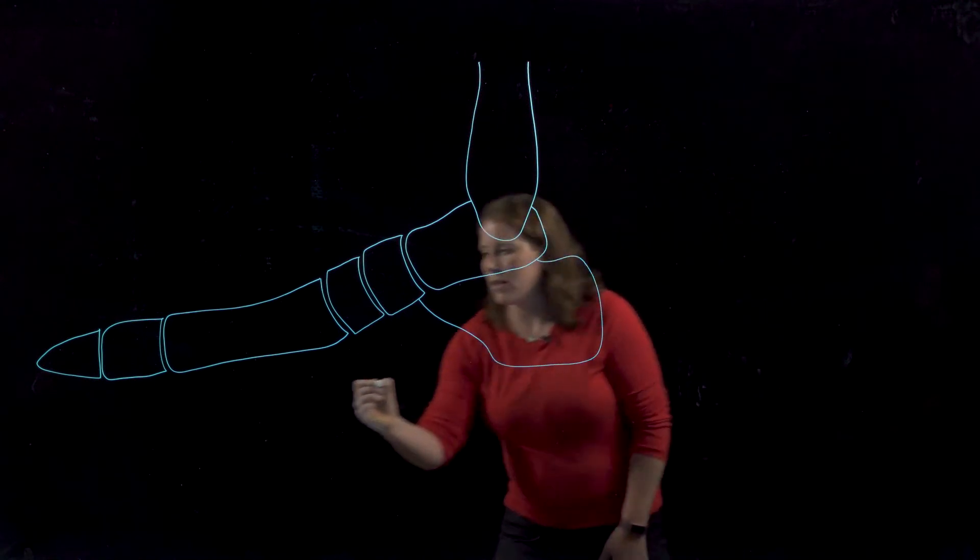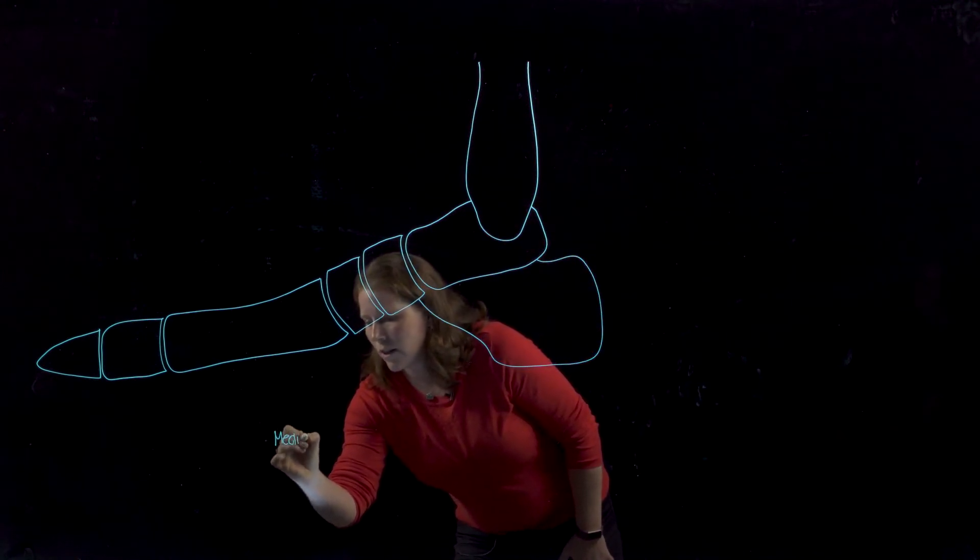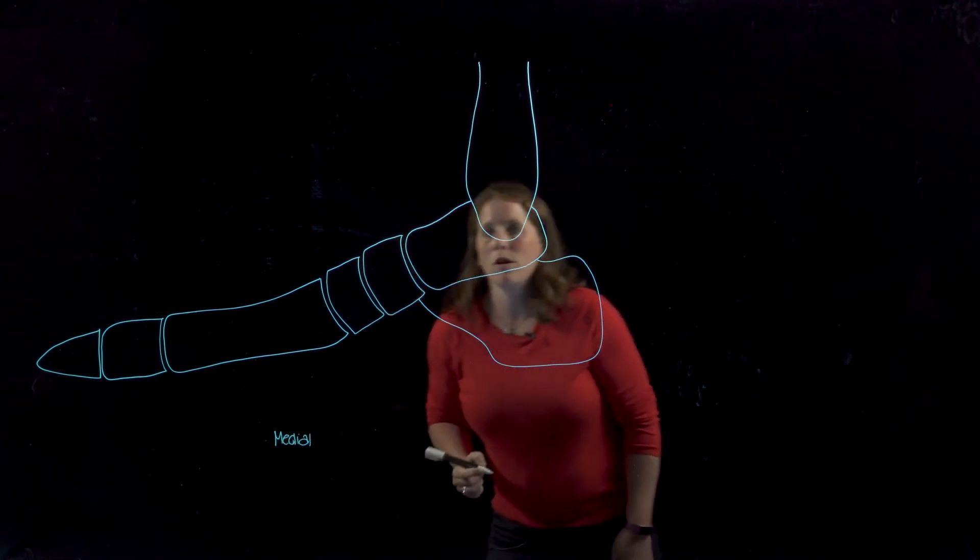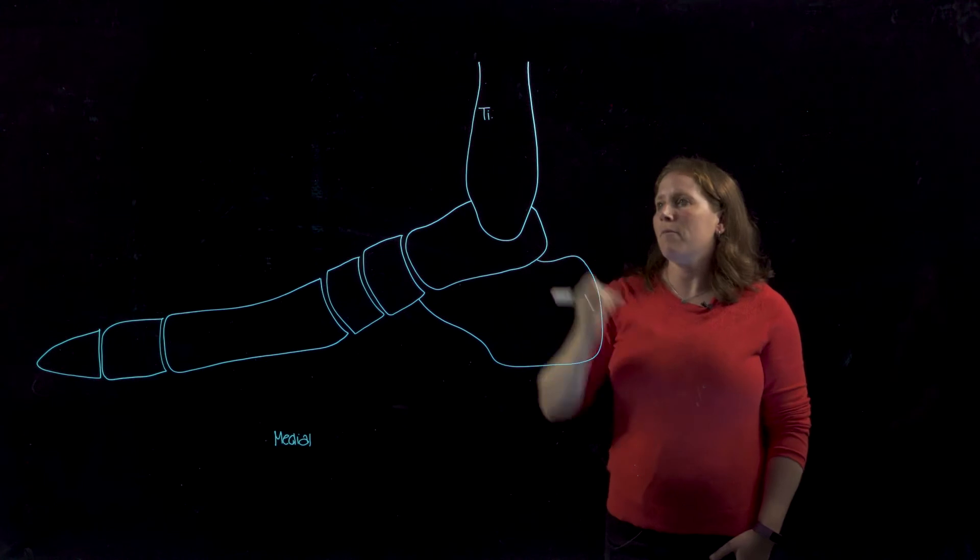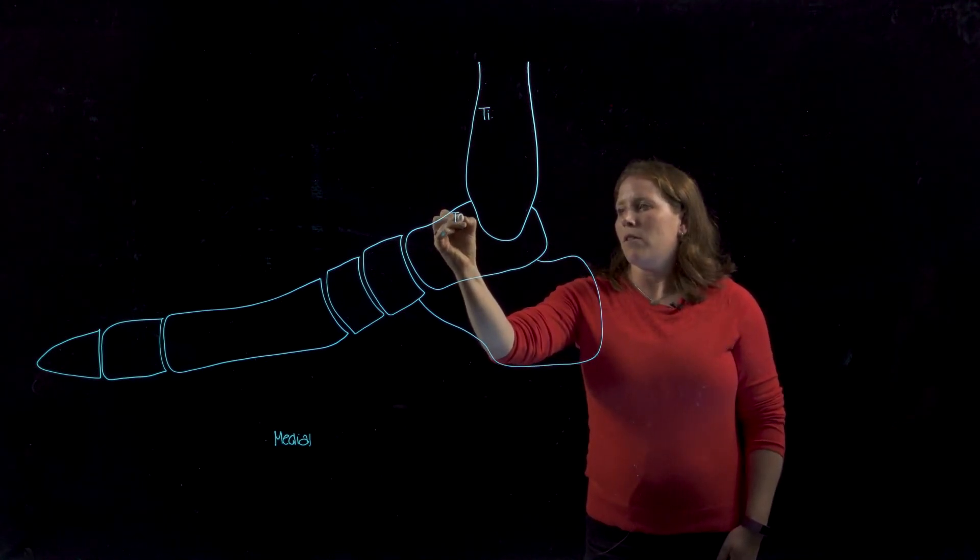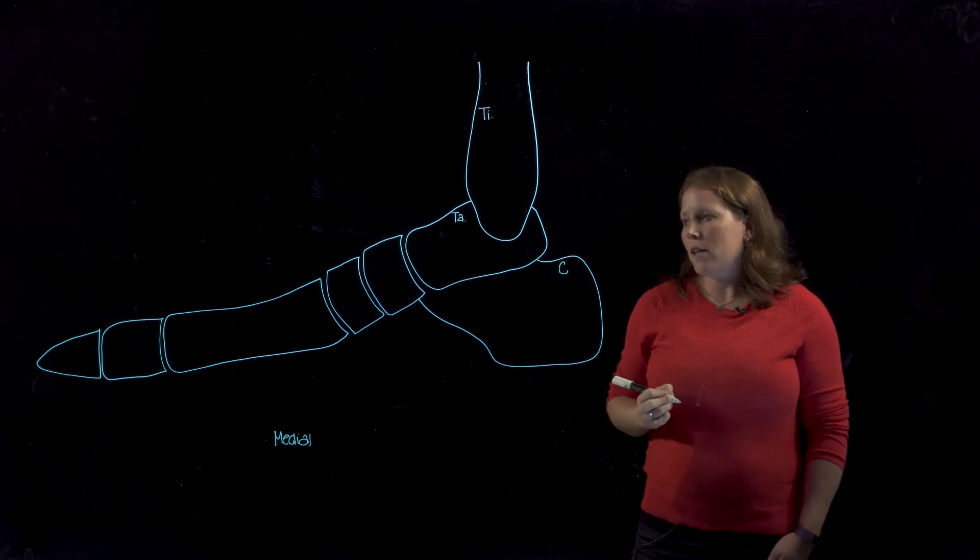So first of all, this is a medial view and let's label the bones that we've drawn. This is the tibia which is articulating with the talus sitting on top of the calcaneus.